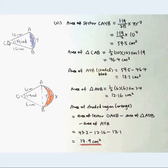Then we find the area of triangle CAB. We have half times 10 times 10 sin 1.19, equal to 46.4 cm².